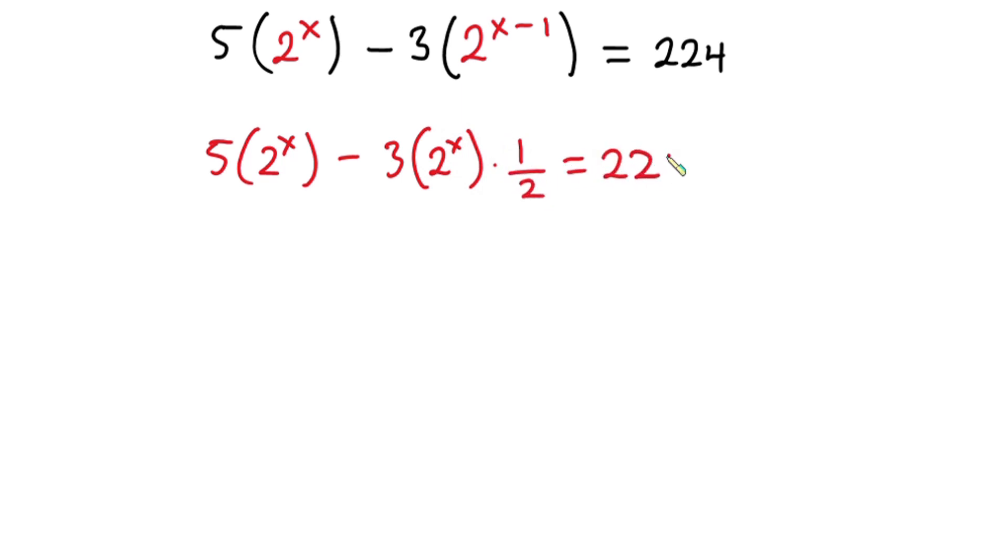You can see we have 2 to the power x here and then we have the exact same thing here, so let's factor it. We have 2 to the power x times, from this whole thing we are left with 5, so we have 5 minus 3 over 2.